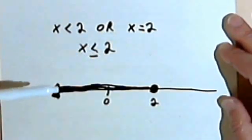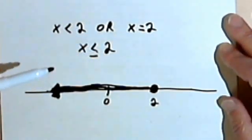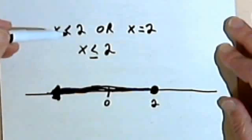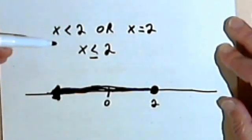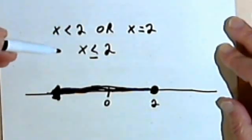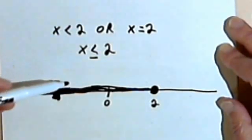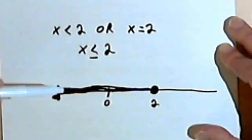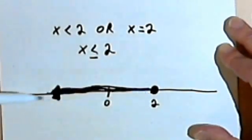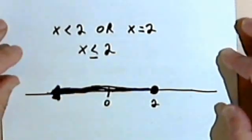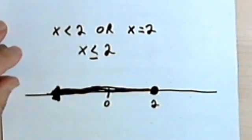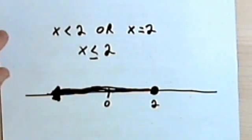And that's really about all there is to it. There are only 4 of these symbols: greater than, greater than or equal to, less than, and less than or equal to. And there's this way of putting them on the number line. So that's going to be it for now — take care, I'll see you next time.